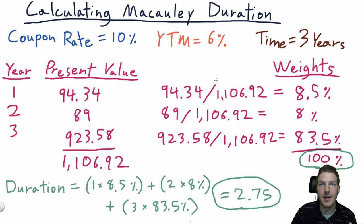What this means is that if interest rates in the market, let's say, fell by 1%, so they went to 5%, then our bond's price, the present value of our bond, would increase by approximately 2.75%.